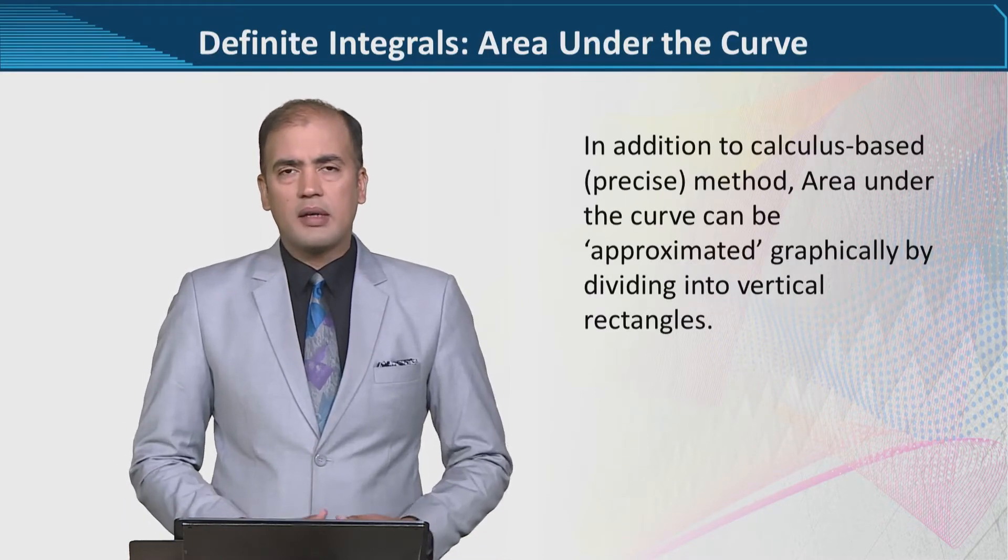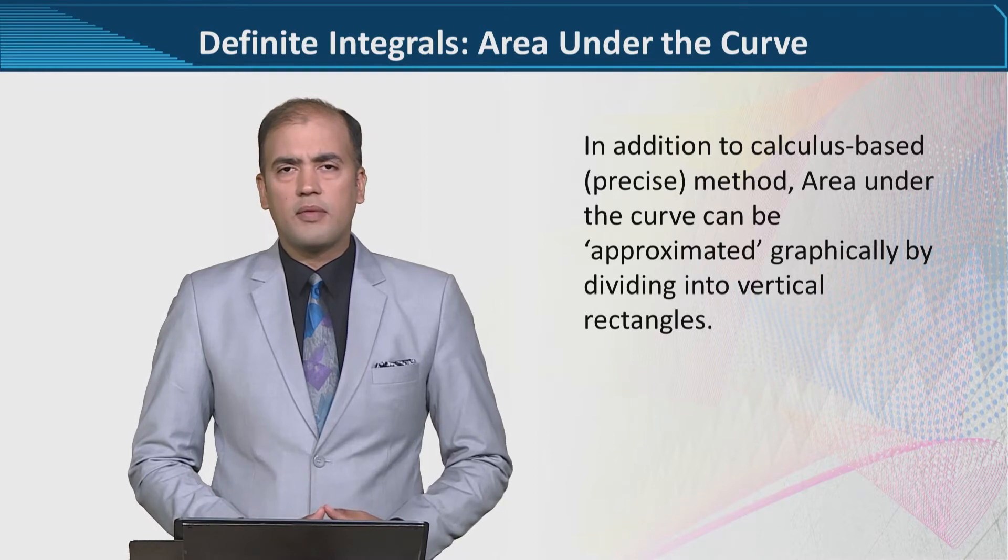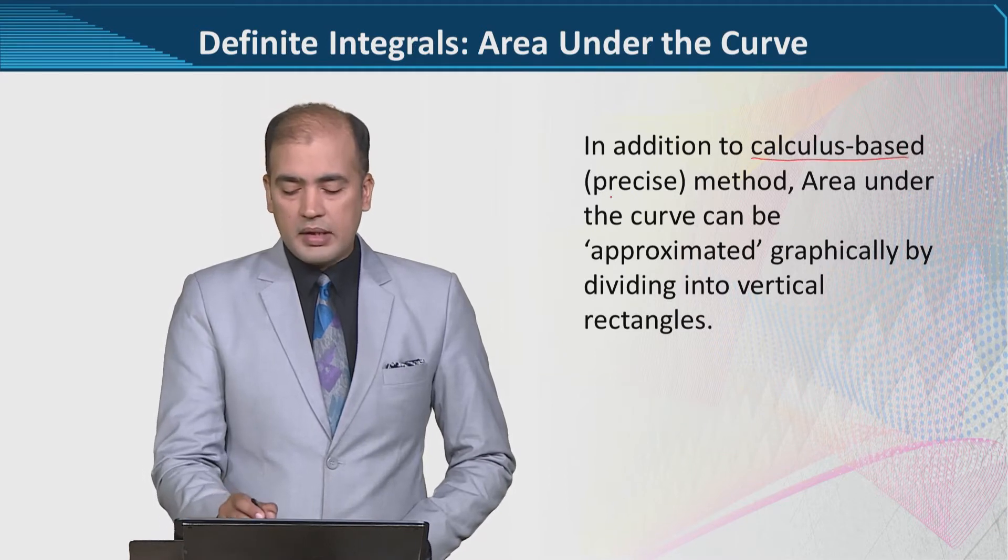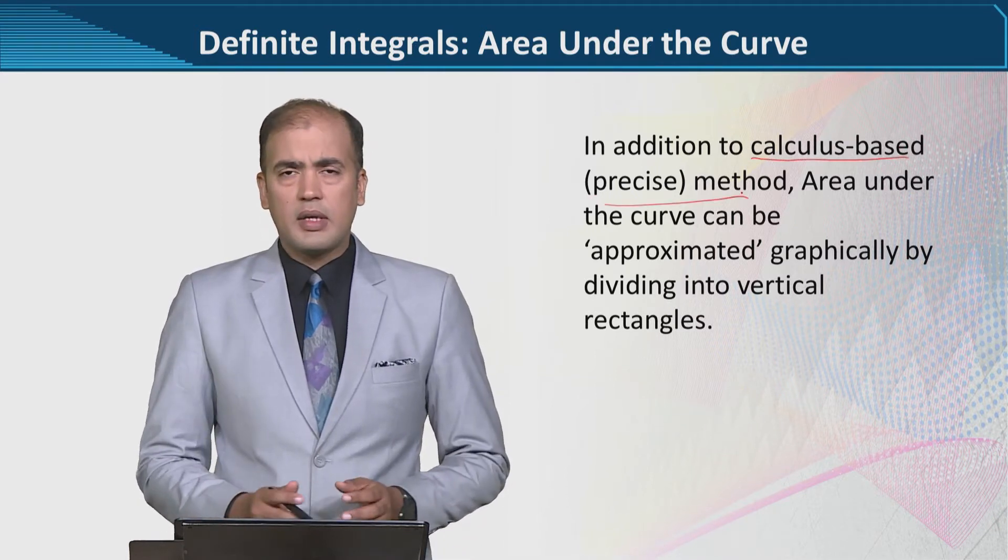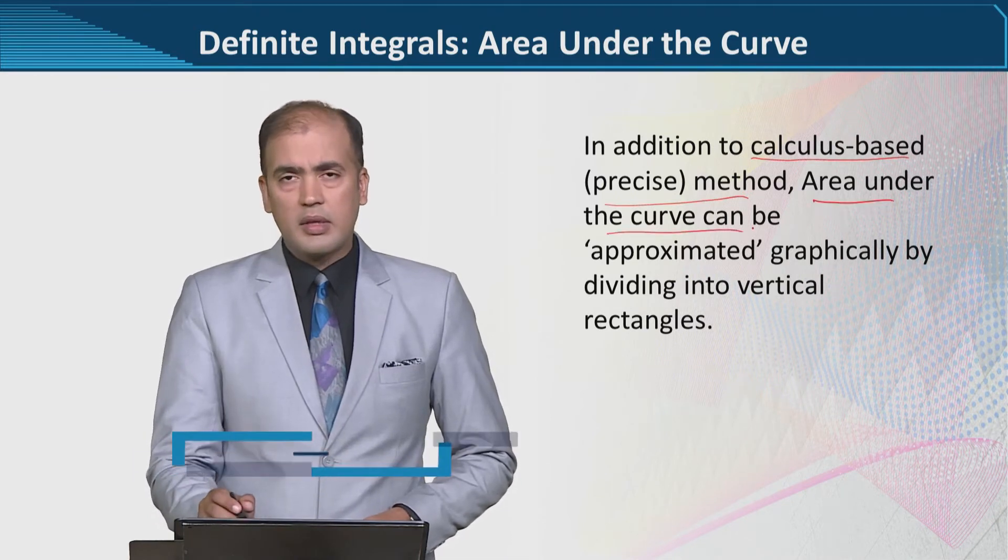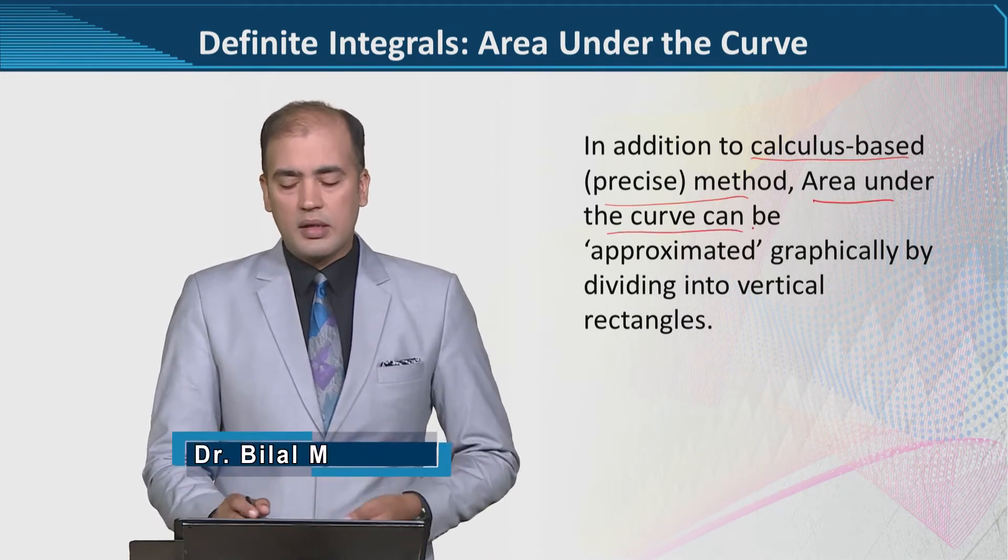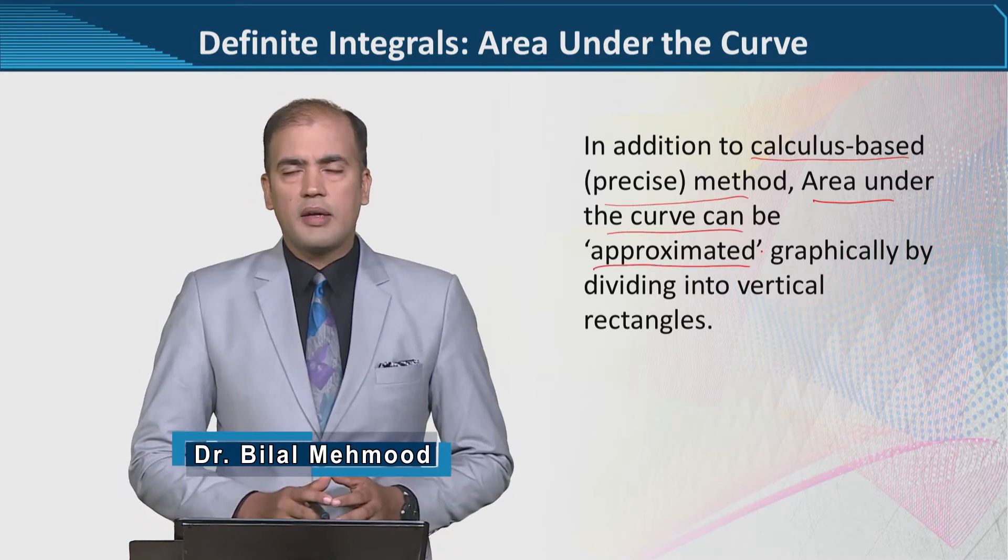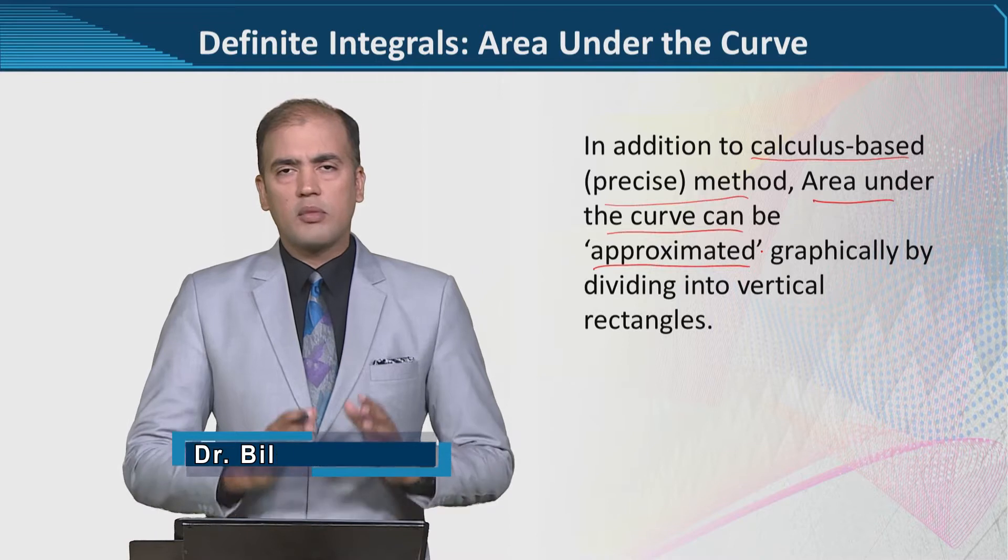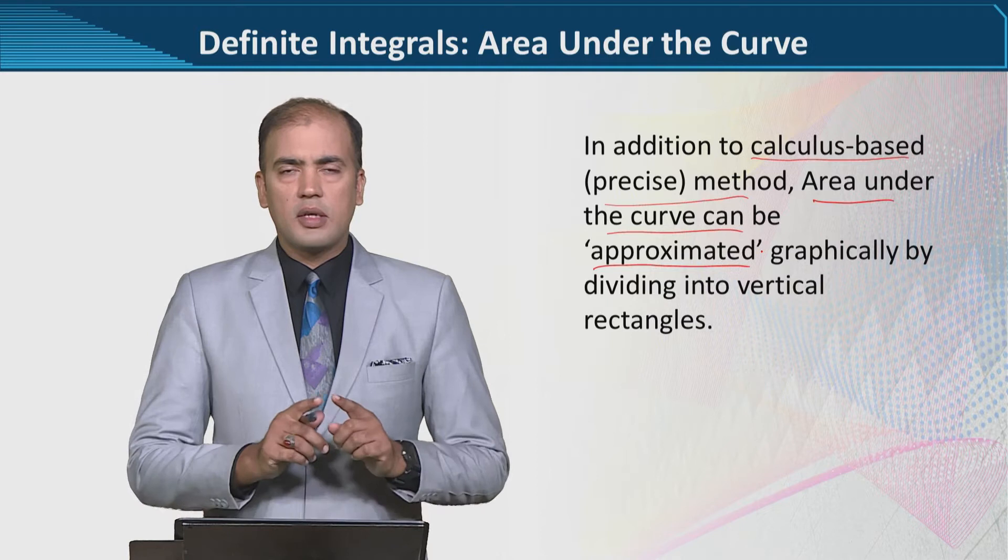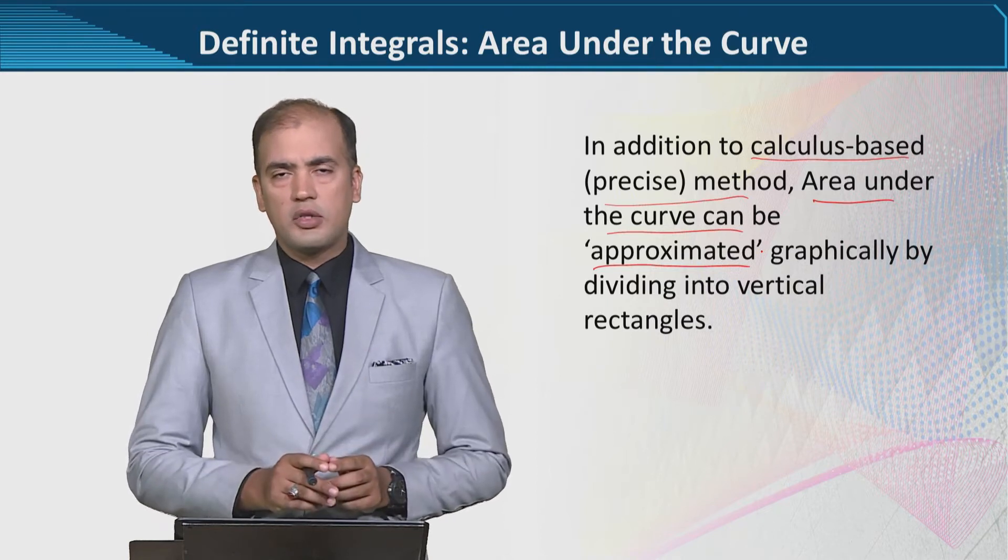Basically, it's an area under the curve as we have discussed in the last lecture. However, further details are given here. It's a calculus-based method that we have learnt in the last lecture, but area under the curve can also be there as another alternative method. However, it's an approximated method, not precise. And how it works is that we can divide that area in small parts in order to get the area of the whole region.